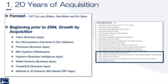First topic: 20 years of acquisition. From the late 1990s through 2010, Oracle pursued a growth-by-acquisition strategy, as well as developing and continuing to develop its own software products. Here is a listing of some of the major technology acquisitions.